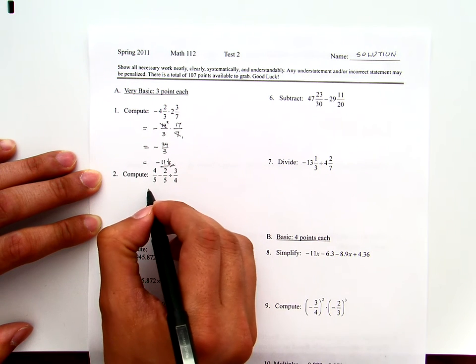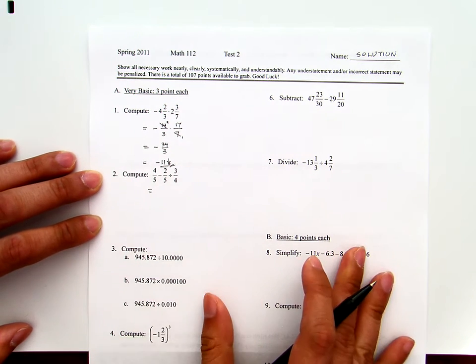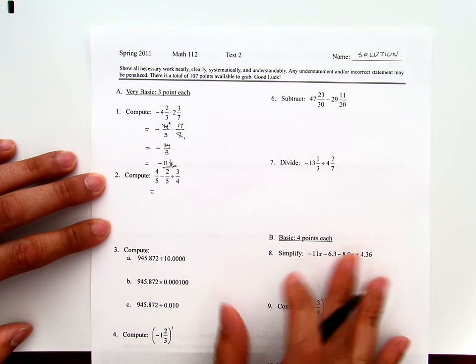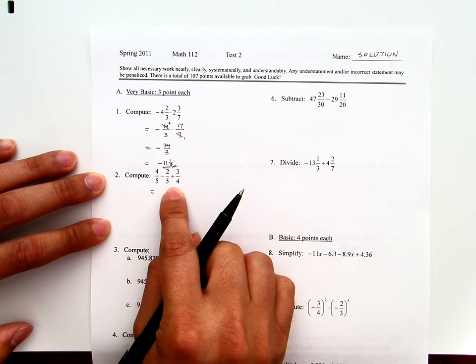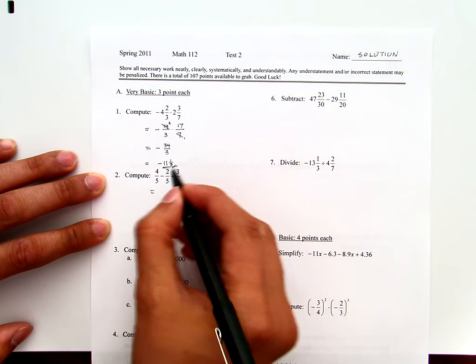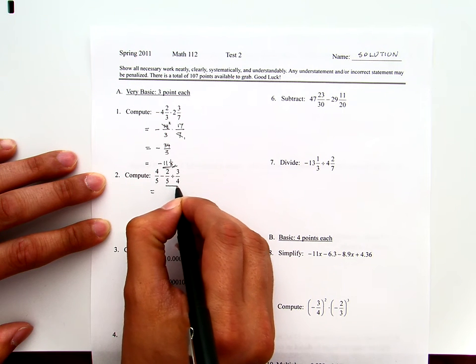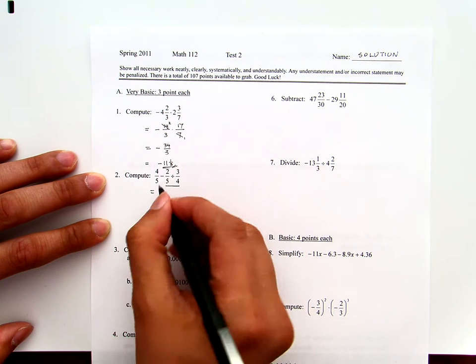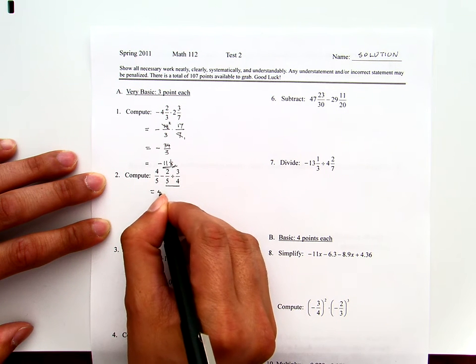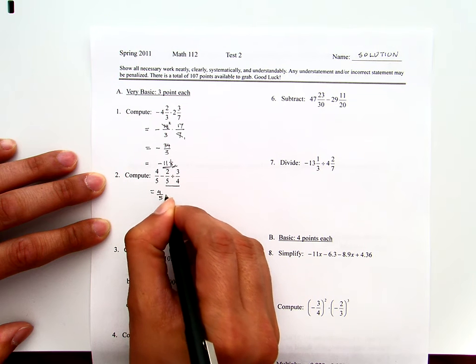Number two: We have subtraction, we have division. According to order of operations, we will do the division first, not subtraction first. Now, for that reason, I will copy whatever I don't need to touch.